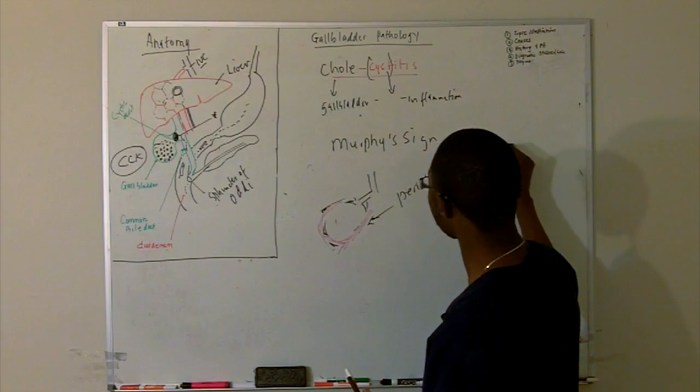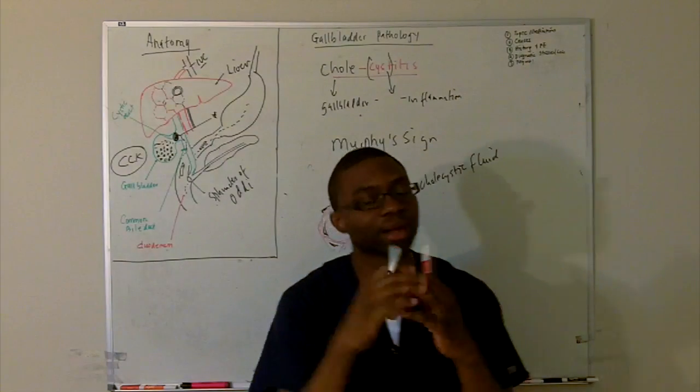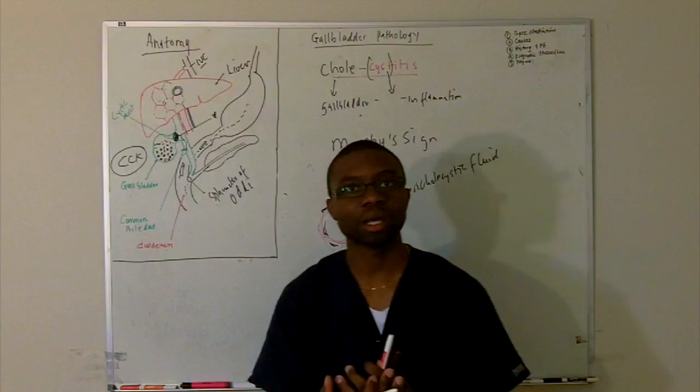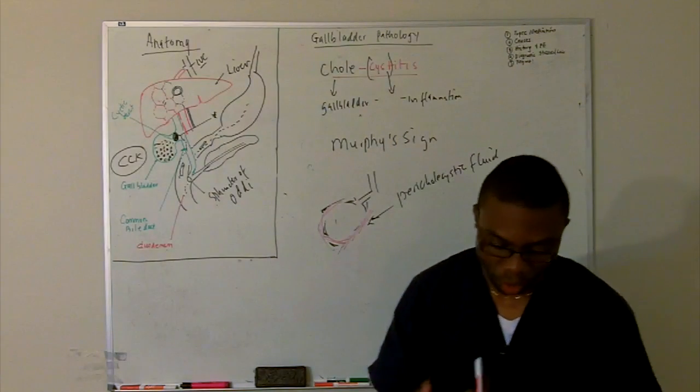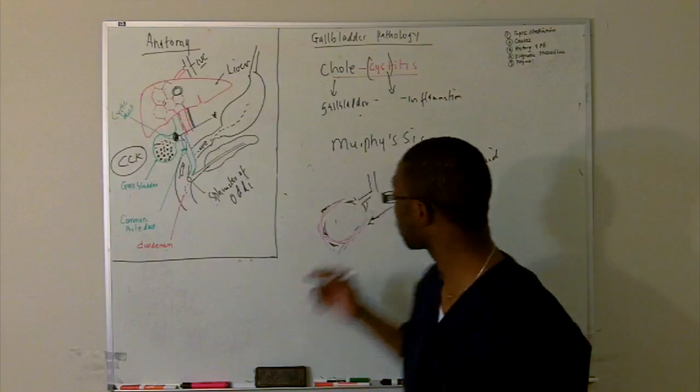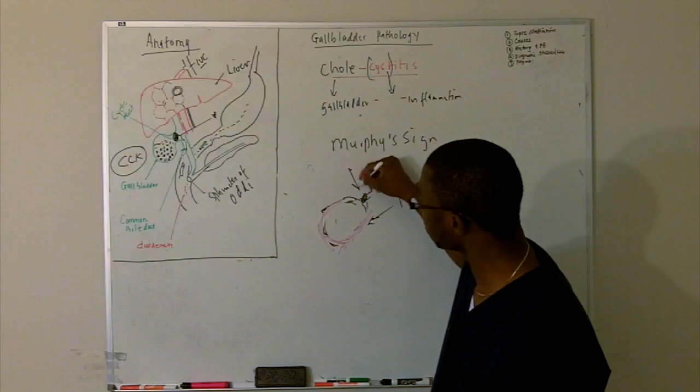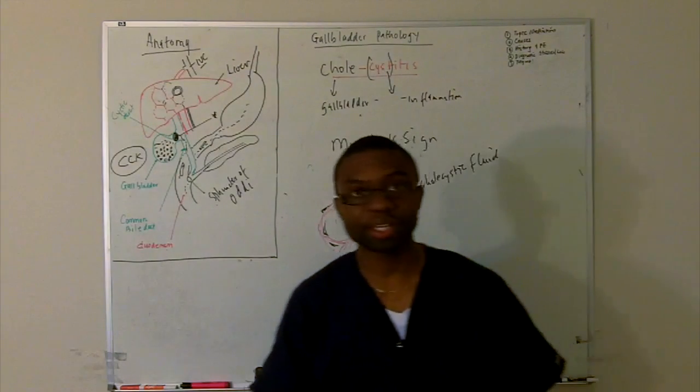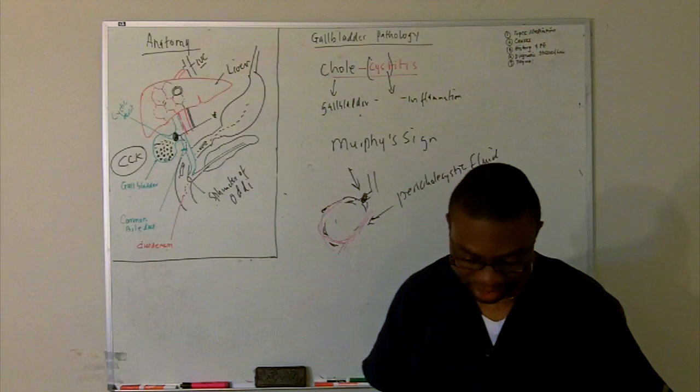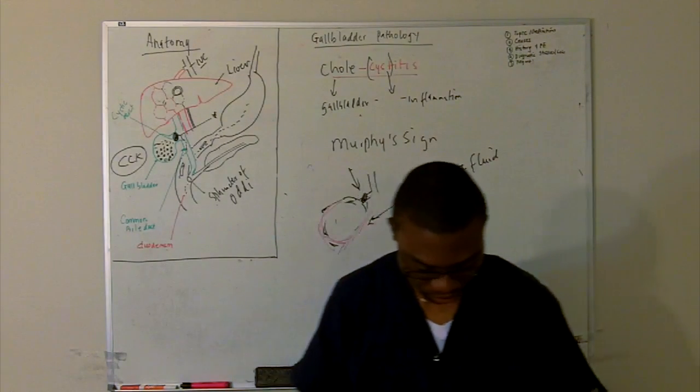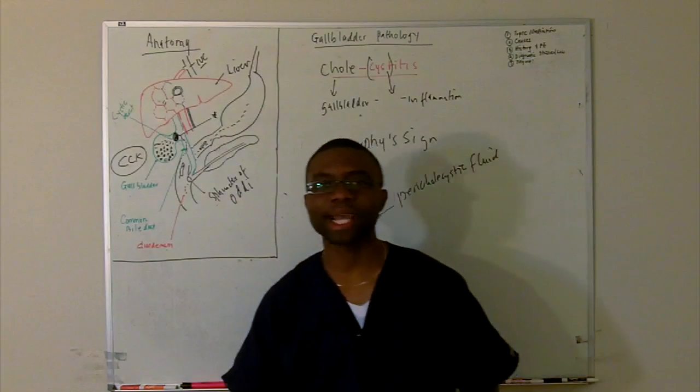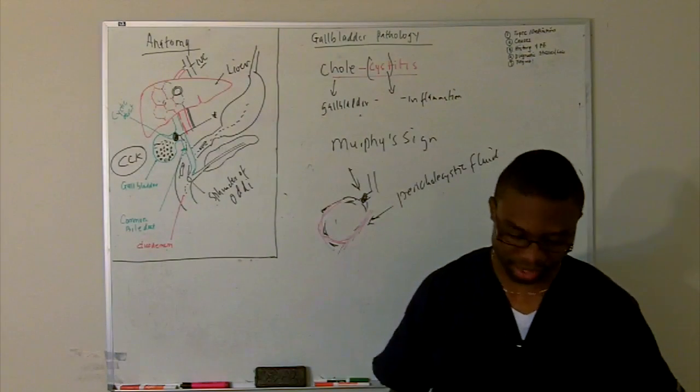Matter of fact, let's change that to red. Because I think red, we scare the crap out of a lot of people. Red means inflammation, right? A lot of inflammation around the gallbladder. We call that what? Pericholecystic fluid. It's a lot of fluid around the gallbladder, around the sac. The sac is wet. What else are we going to see? We might find a stone. If we see the stone, bam. We've got a cholecystitis going on.